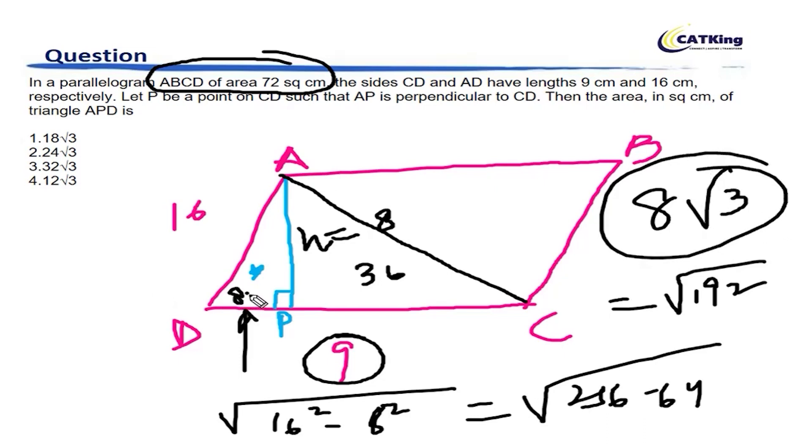So, the base is 8 root 3 and height is 8. So, the area will be 64 root 3 by 2. The answer is 32 root 3. I hope this is clear to you.